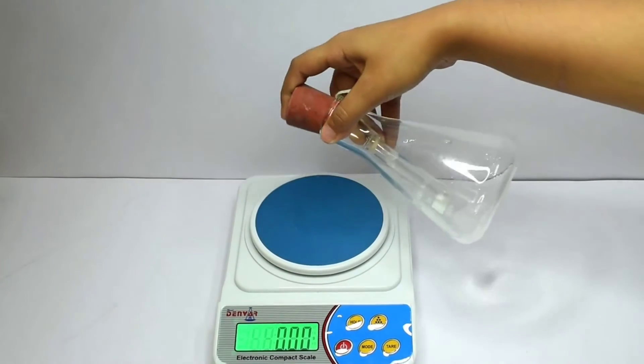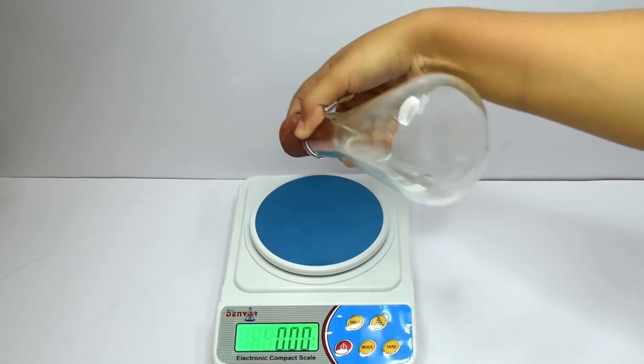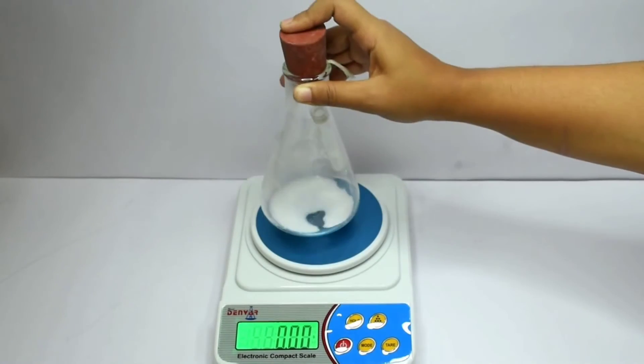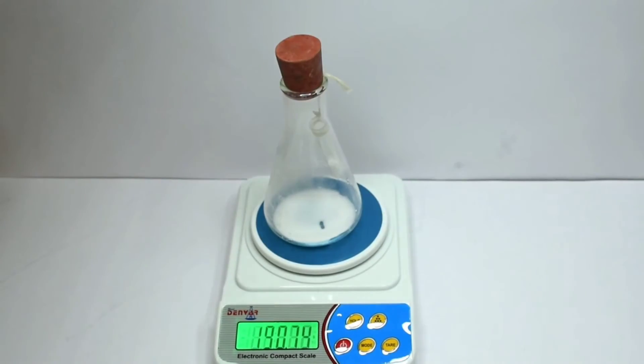Gently tilting and swirling the flask, we will allow the two solutions to mix and weigh again. If you observe carefully, the weight after the reaction is equal to the weight before the reaction.